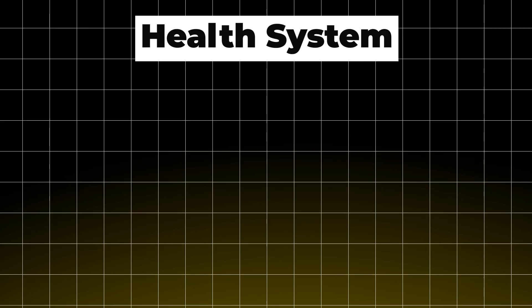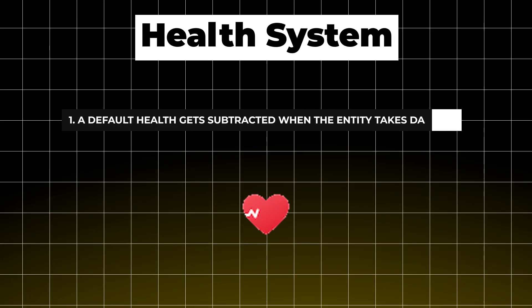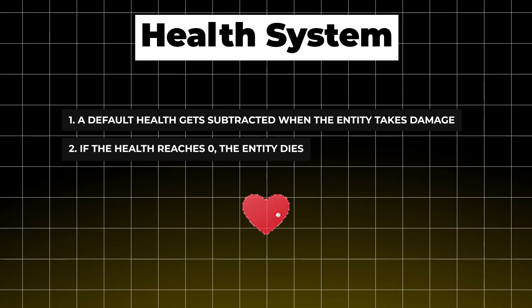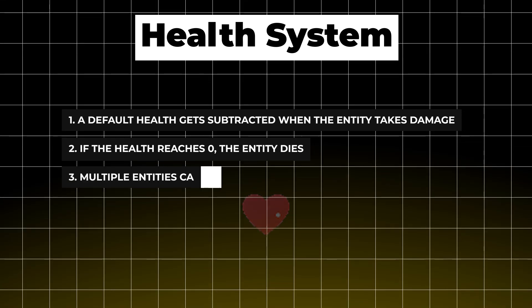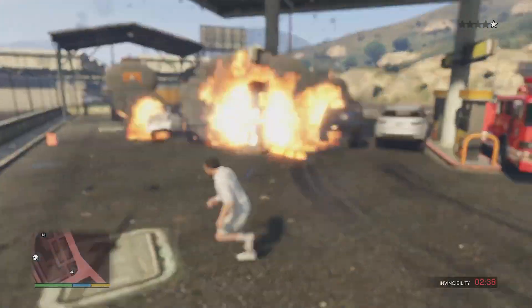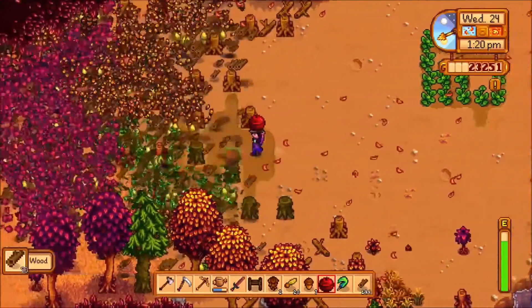Let's get started with the first system: a health system. The requirements are: there's a default health that gets subtracted whenever the entity takes damage; if the health reaches zero the entity dies; and multiple entities can have health and die in different ways — for example, a character can play a death montage, a vehicle can explode, and a tree can lose its leaves and fall.